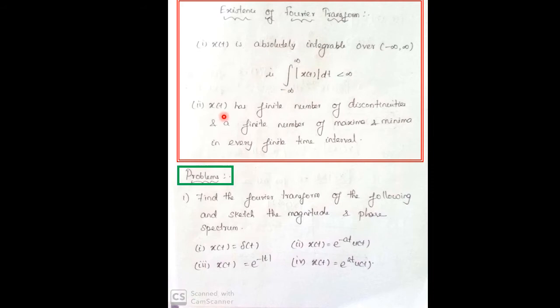The second condition is that x(t) should have a finite number of discontinuities and a finite number of maxima and minima in every finite time interval. That means for each interval we should have a finite number of discontinuities, maxima, and minima.